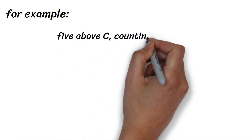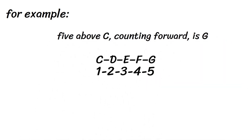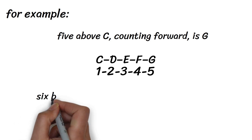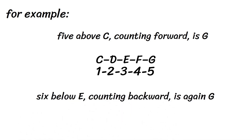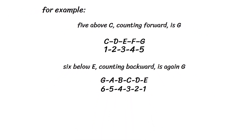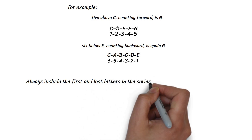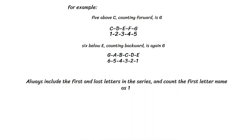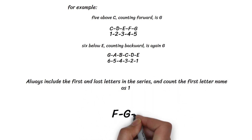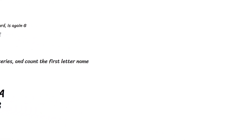For example, five above C, counting forward, is G: C, D, E, F, G. And six below E, counting backward, is again G: E, D, C, B, A, G. Always include the first and last letters in the series, and count the first letter name as 1. So 3 above F is A, not B — count F, G, A, not G, A, B.